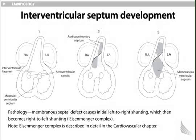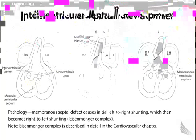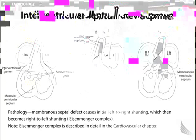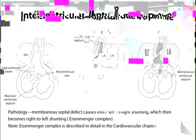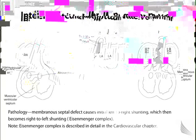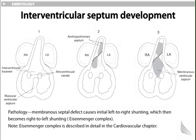Regarding pathology: a membranous septal defect causes initial left-to-right shunting, which then becomes right-to-left shunting. This is known as the Eisenmenger complex, which is described in detail when the cardiovascular chapters are covered.